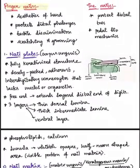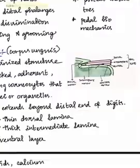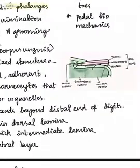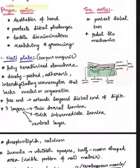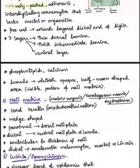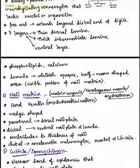The nail plate contains interdigitating corneocytes that are closely packed and lack nuclei or any other organelles. It contains three layers: the thin dorsal lamina, the thick intermediate lamina, and a ventral layer which mainly contains phospholipids and calcium.